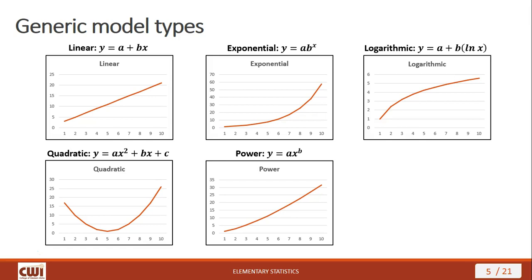There are other forms a model can take — the model could actually conform to a statistical distribution. Many of the models I made in industry conform to the Weibull distribution, which is very useful for engineering applications because the Weibull distribution can mimic other distributions. I can turn the Weibull into a linear, exponential, power, or logarithmic model simply by adjusting different variables within that distribution model. We won't be looking at that distribution here — we're only going to look at the five listed, which is enough to give us a flavor for non-linear regression.